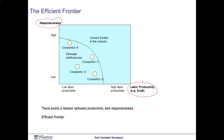On the other hand, you can increase your responsiveness if you keep your utilization very, very low — good for responsiveness, but bad for productivity. Thus, there exists a tension between those two forces: responsiveness and productivity. Now consider call centers A, B, and C. All of these call centers are on a line we previously defined as the efficient frontier in the industry. This means there is no player, no company, no call center that dominates competitor A, B, or C — meaning firms that are both faster and at the same time cheaper. Competitor D is not on the frontier; for competitor D, we have a distance to the frontier, and that is what inefficiency looks like at this very high level perspective.